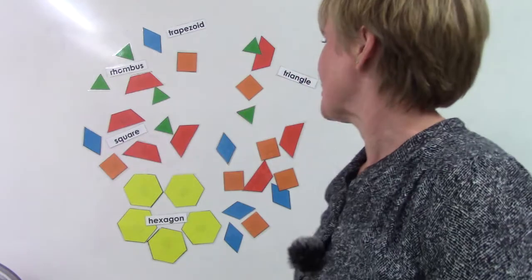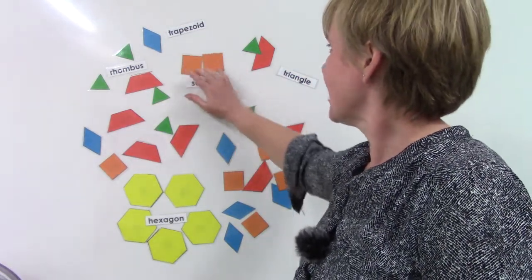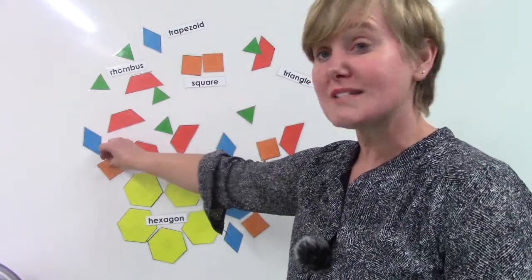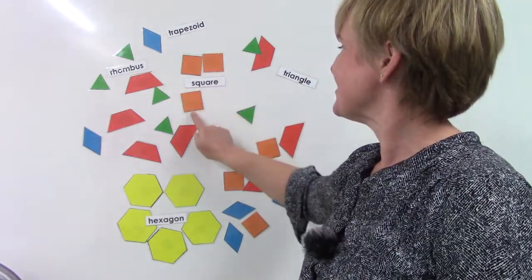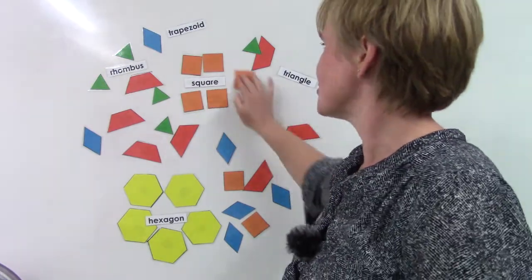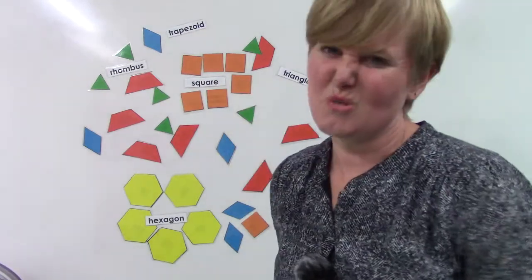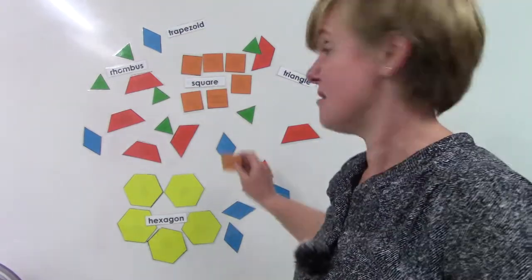What's another shape that we should look at? What about square? Our squares have four sides. One, two, three, four. In our pattern blocks, our squares are orange. But squares can be any color or no color at all.